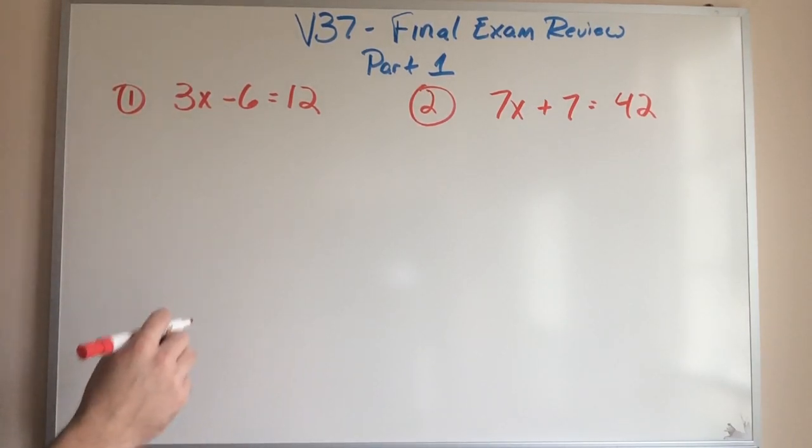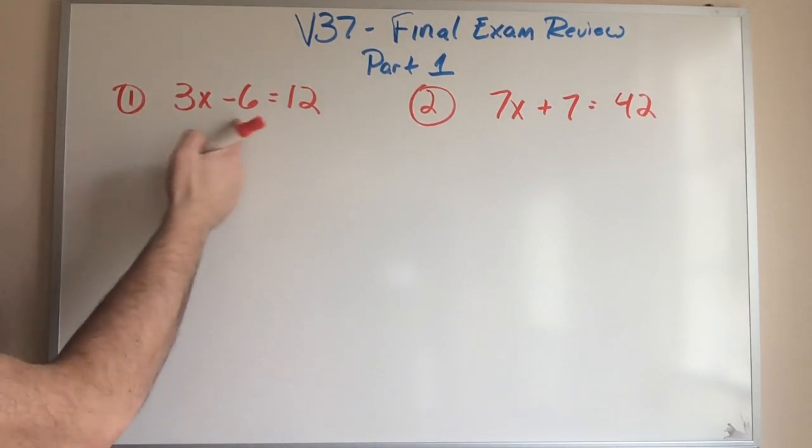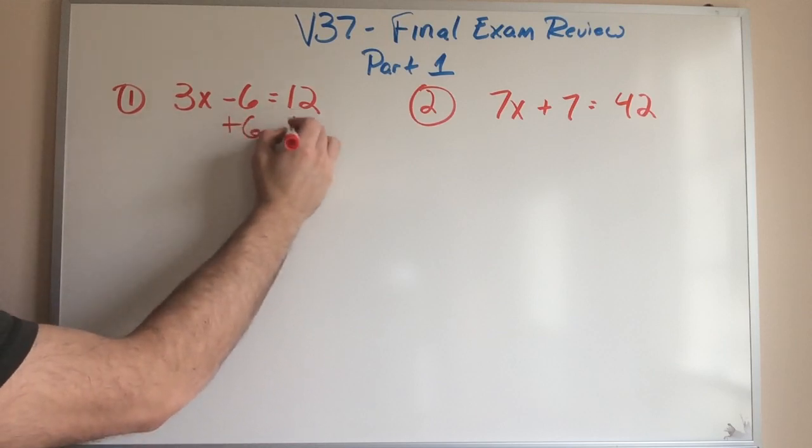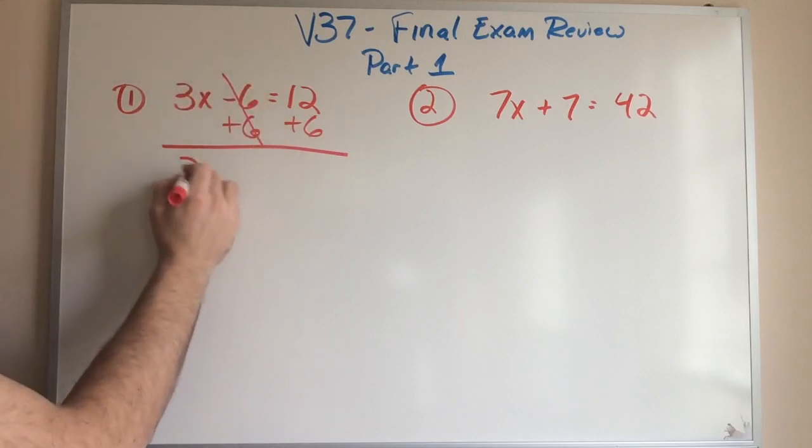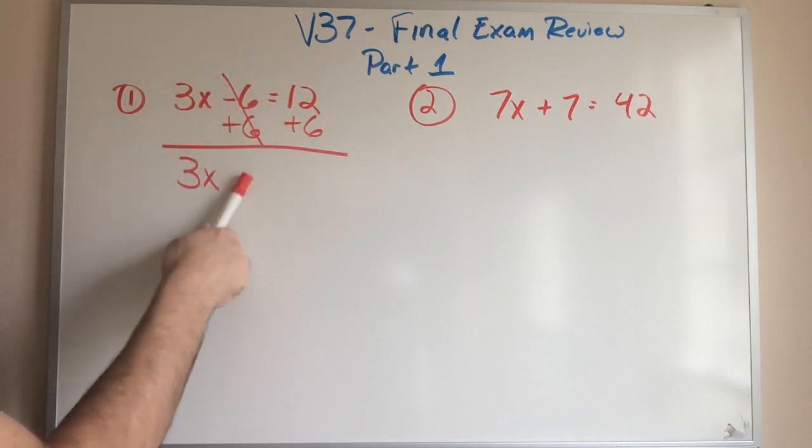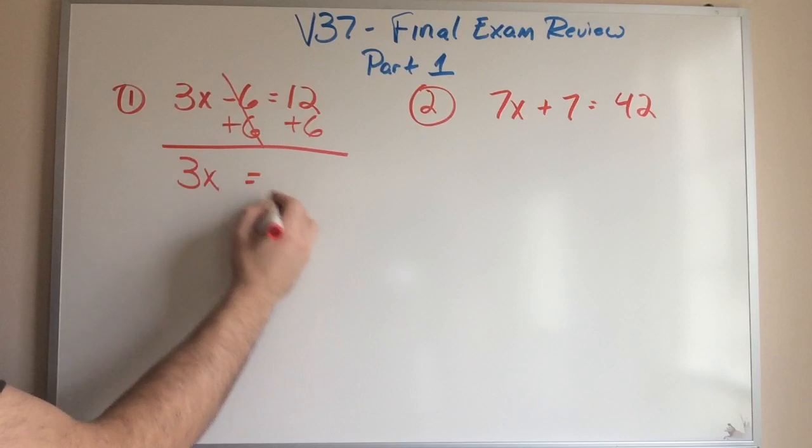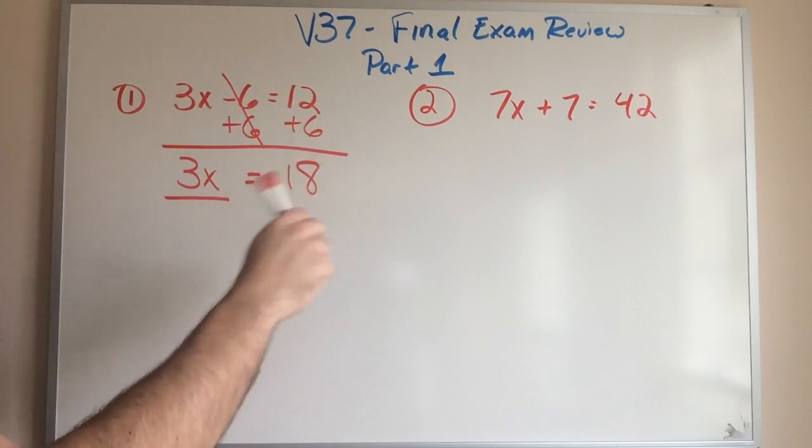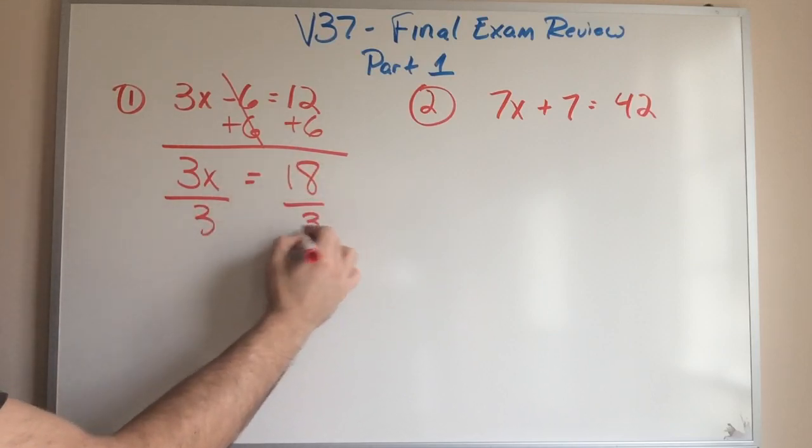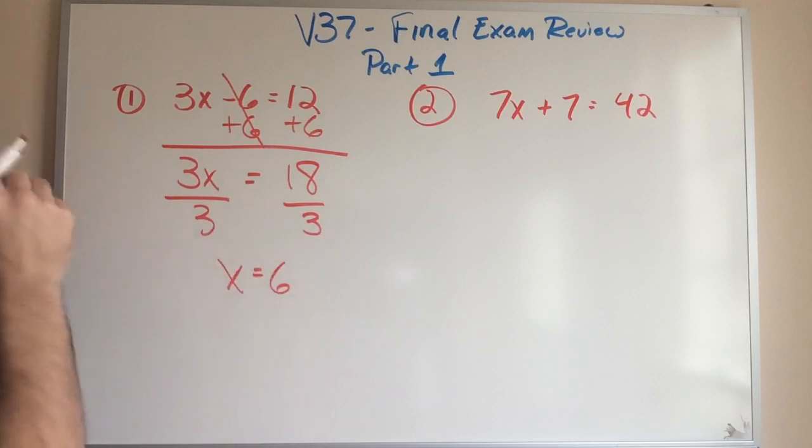So for number one, I'm going to solve for X. The first thing I need to do is there's a negative six here. I got to get rid of it. So I'm going to do the opposite. I'm going to add six to both sides. When I get down, I'm going to cross this out. I'm bringing down my 3X. This was gone. And 12 plus six is going to be 18. Now 3X equals 18. Divide by three on both sides. And my answer is going to be X equals six.